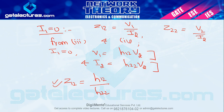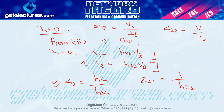So whether we use method number 1 or method number 2, we can calculate the relationship between parameters and get the same results. If you have any doubts, you can write in the comment section. In the next video I will take one more example so that your concept becomes even clearer. Goodbye.